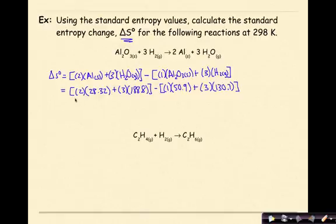So here I have my entropy values filled in for each one of my reactants and products. So my value for aluminum solid is 28.32 plus my 3 moles of water in the gaseous state, which the entropy value is 188.8 minus my reactants,